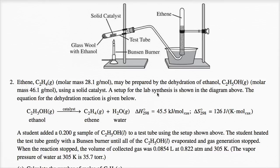A setup for the lab synthesis is shown in the diagram above. The equation for the dehydration reaction is given below. We have the ethanol, and then in the presence of a catalyst, we're going to yield, after our reaction, some ethene and some water.